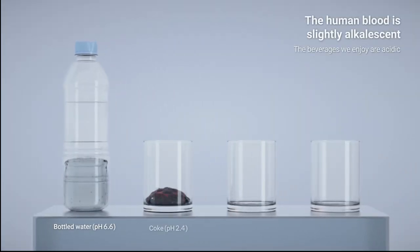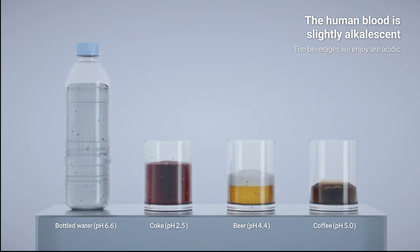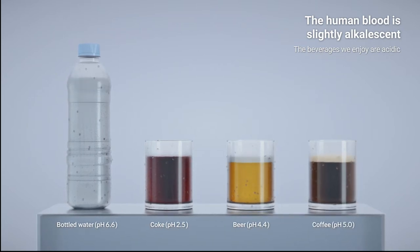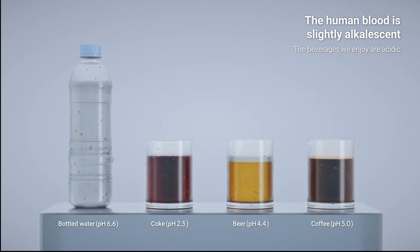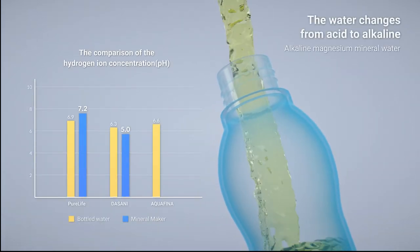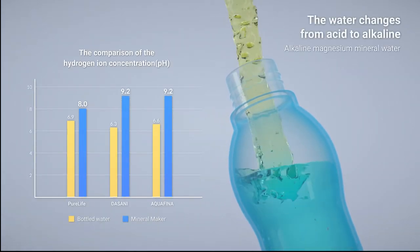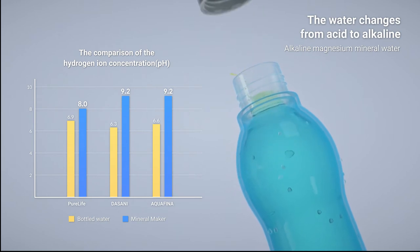Even though the human blood is alkalescent, most of the beverages or bottled water that we enjoy drinking are acidic. Once you pour water into our mineral maker, you'll soon be enjoying alkalescent mineral water enriched in magnesium.